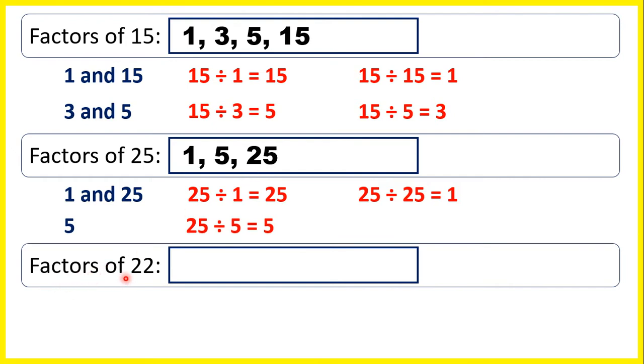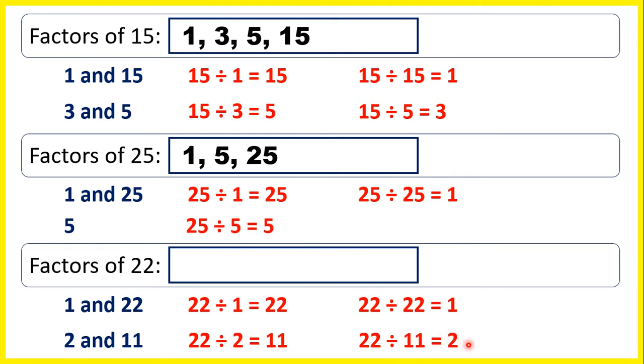The number 25 isn't in any other times tables. For factors of 22, we can start with 1 and 22. But 2 and 11 are also factors, because 2 times 11 is 22.